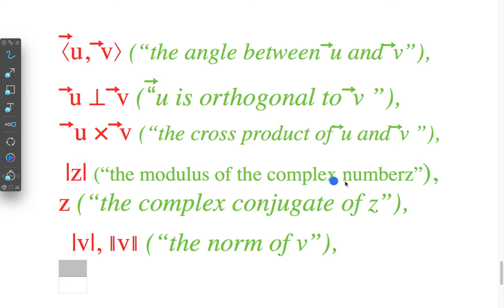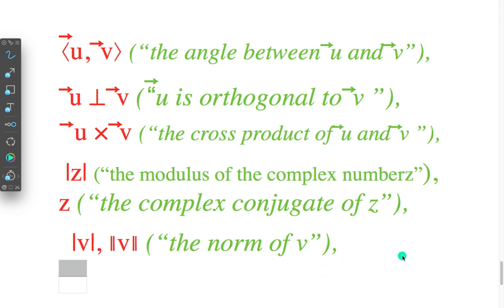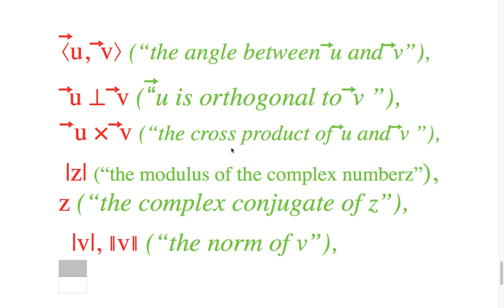Modulus of complex number, complex number conjugate of z, norms of b. In this way we have seen some notation of mathematical symbols.